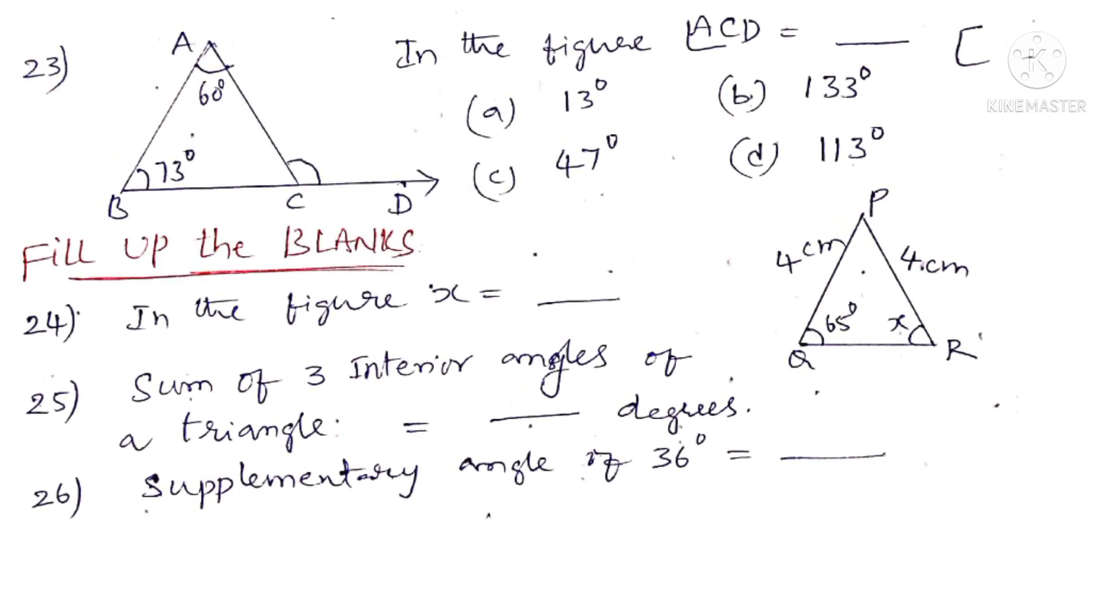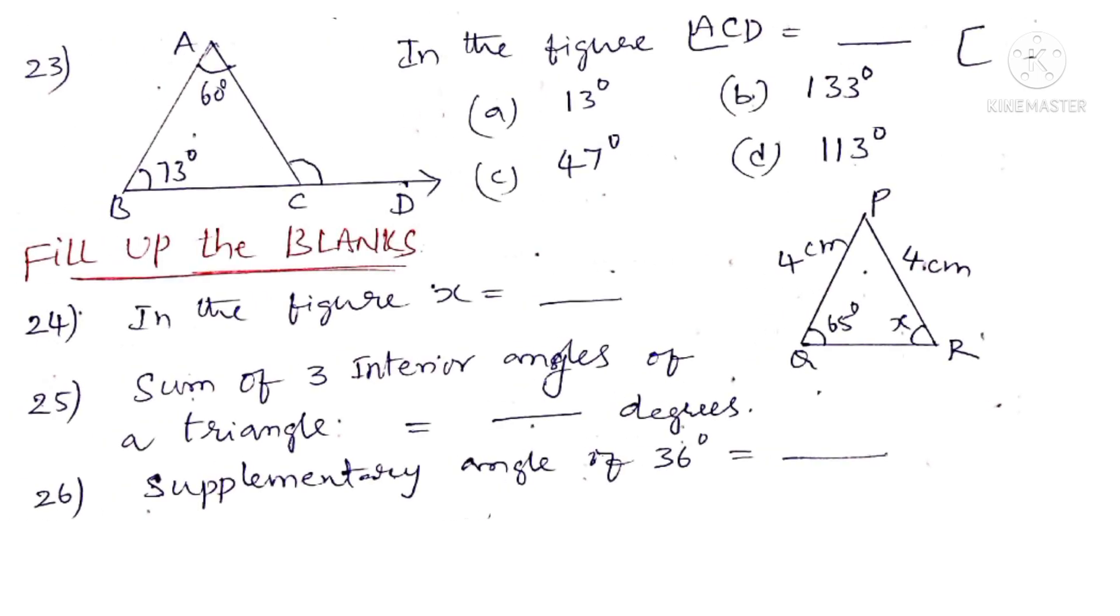Now 23rd question. In the figure angle AOC is equal to dash. Observe that sum of the angles in triangle ABC is equal to 180 degrees. So angle C is equal to 180 minus 60 plus 73 that is equal to 47 degrees. Observe that BCD is a straight line. So it has an angle of 180 degrees. So on the left side of angle C it is 47 degrees. So right side angle must be 133 degrees. Then only 47 plus 133 becomes 180 degrees. So the correct choice is B.